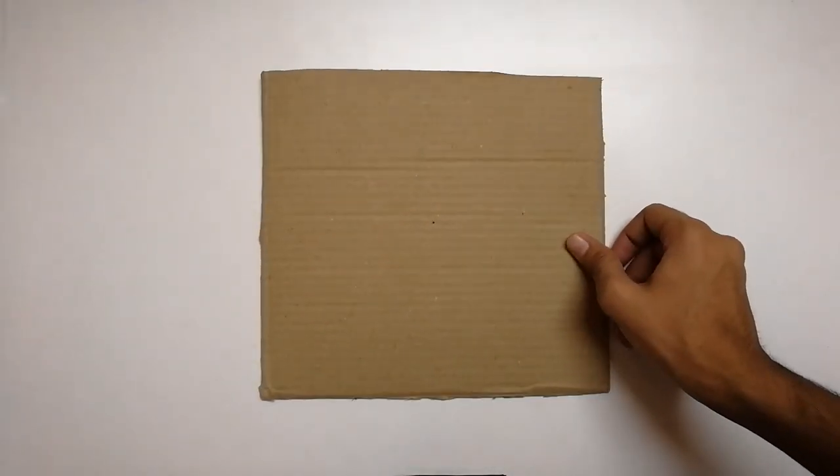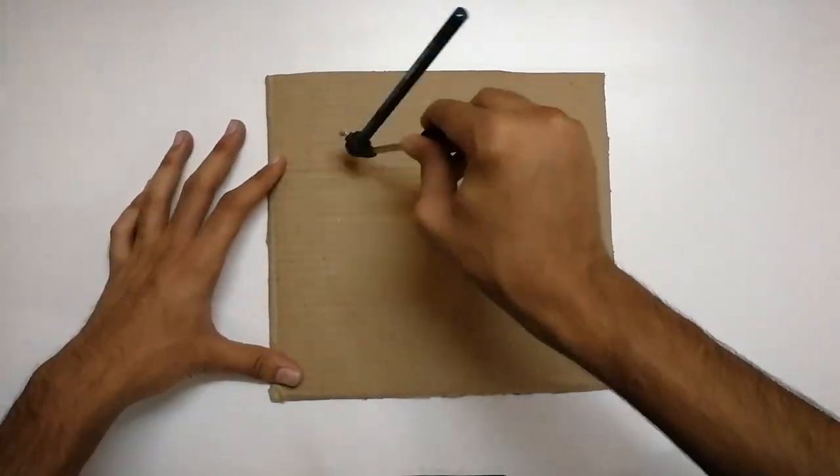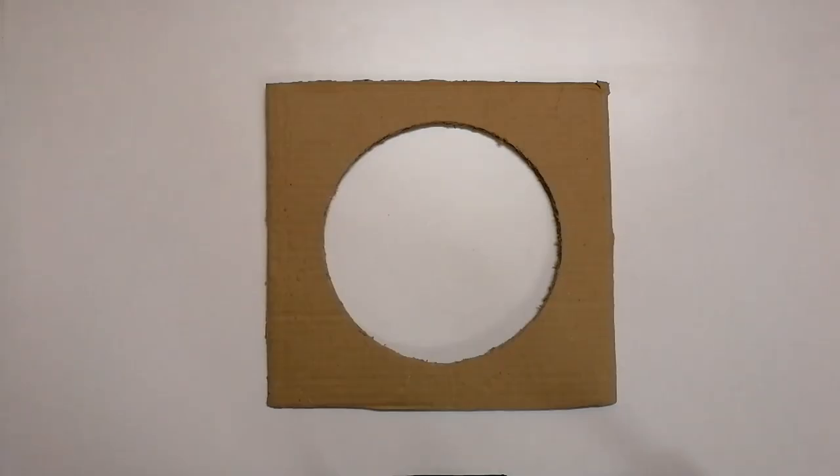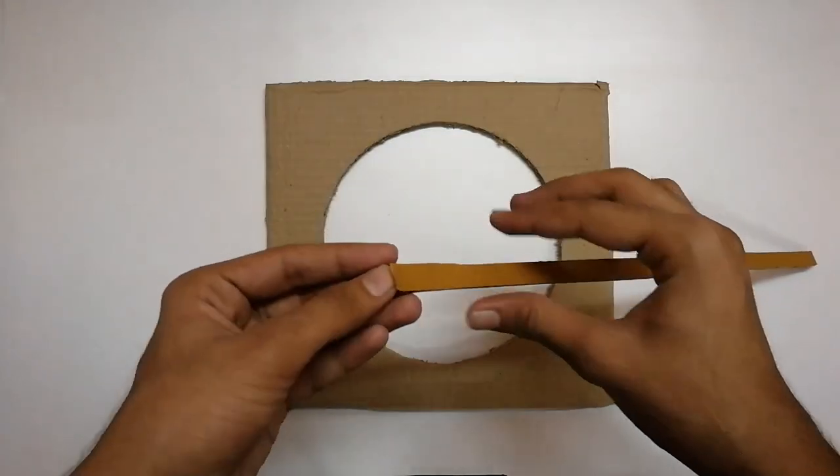First, take a piece of cardboard and with the help of a compass, draw a circle of radius 8 centimeters. Cut it out cleanly. Now take a strip of cardboard about 1 centimeter wide and peel off the paper from one side.